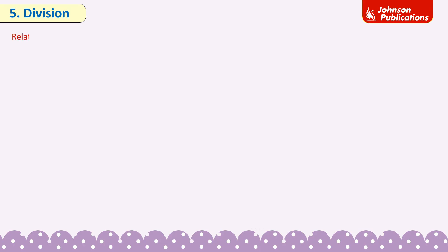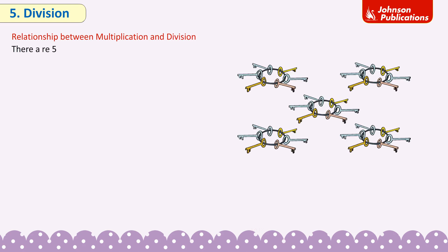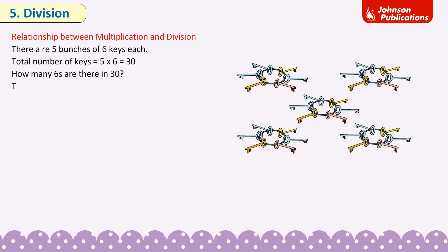Division: Relationship between multiplication and division. There are 5 bunches of 6 keys each. Total number of keys is equal to 5 multiplied by 6, which is equal to 30. How many 6s are there in 30? The answer is 5. Therefore, 30 divided by 6 is equal to 5.